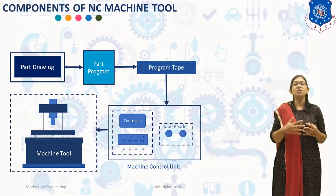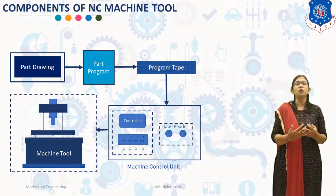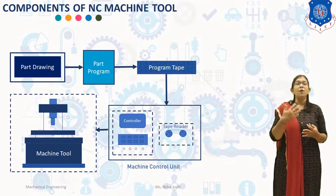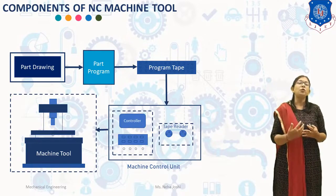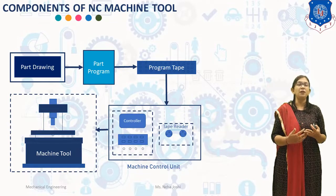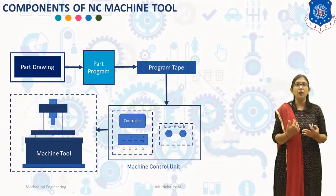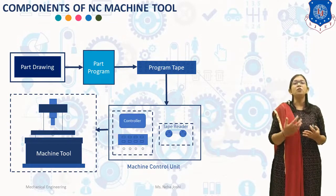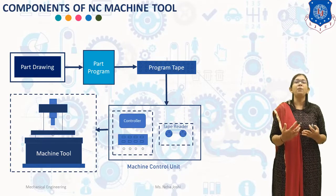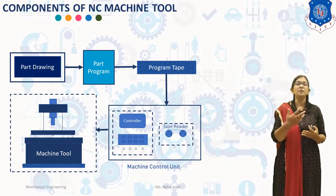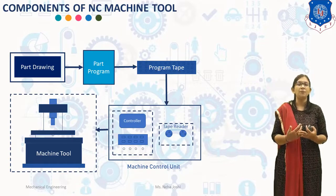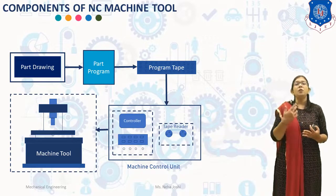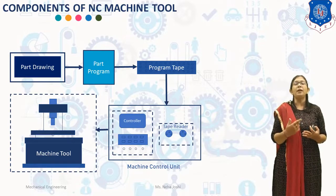The set of instructions includes: instruction for the position of machine tool spindle with respect to the work table, instruction for cutting operations, and instruction for selection of spindle speed and cutting tools. Generally there are two methods of part programming for NC/CNC machine tools — that is manual part programming and computer-aided part programming.